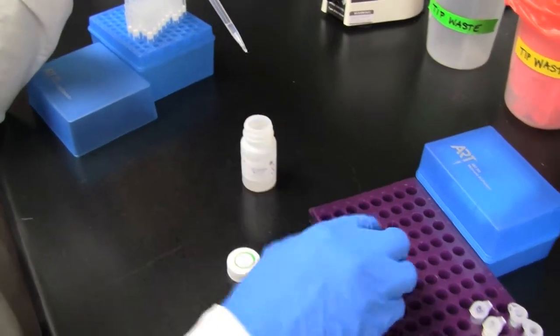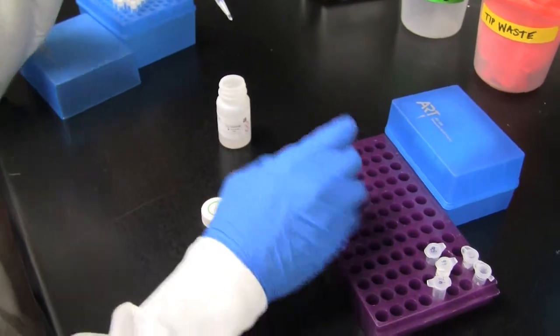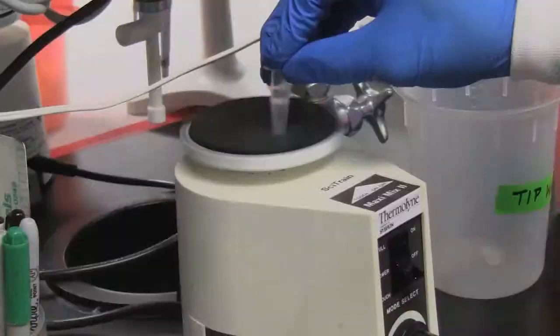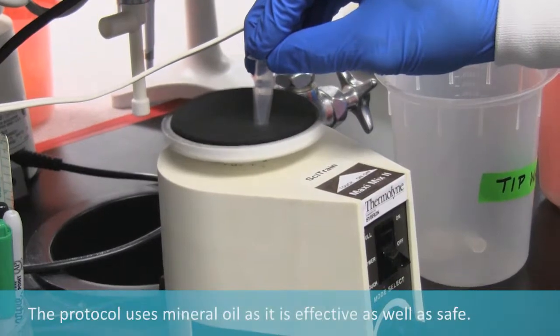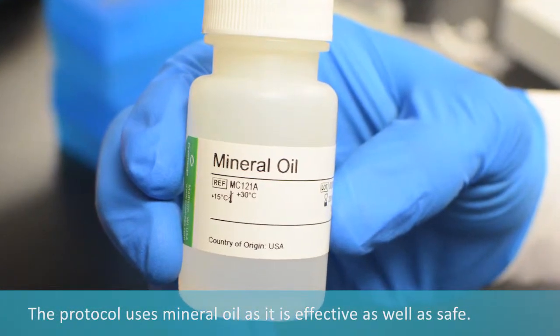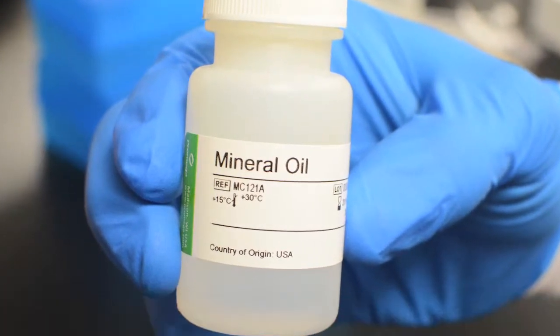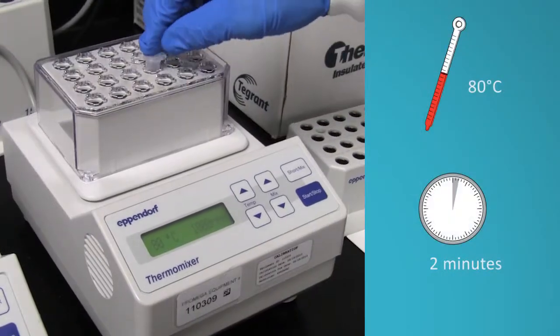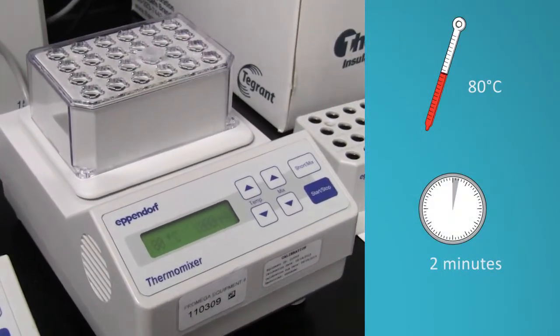Add 300 microliters of mineral oil and vortex for 10 seconds to dissolve the paraffin. Other protocols might use xylene or citrus salt, but we use mineral oil as it is just as effective and less toxic. Heat the sample for 2 minutes at 80 degrees Celsius to help dissolve the paraffin.